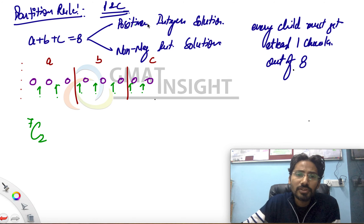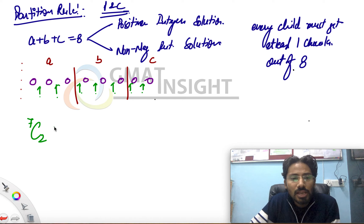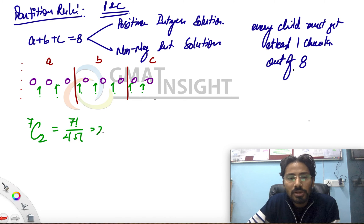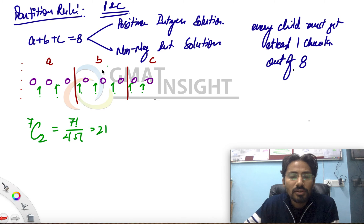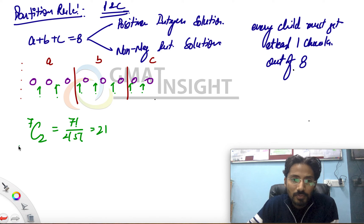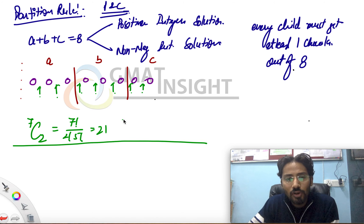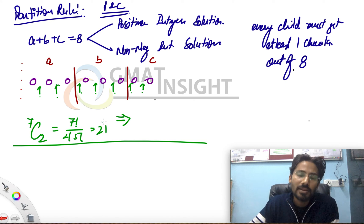In how many ways can it be done? The answer is 7C2, because the total number of ways of choosing two spaces out of seven available spaces for these two partitions is 7C2. So that becomes the answer: 7C2 = 7! / (2! × 5!) = 21. That's the positive integer solution for this particular question. Now let's structure it as a formula — let's understand why we're getting seven.